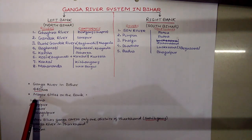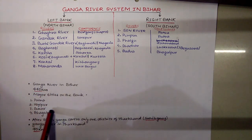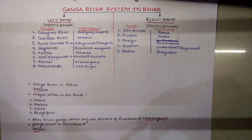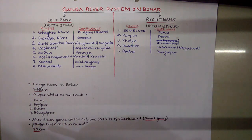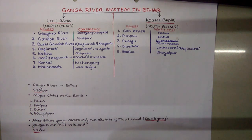Major cities on the bank of the Ganga in Bihar are: Patna, Hajipur, Buxar, and Bhagalpur. After Bihar, the Ganga covers only one district of Jharkhand — that is Sahibganj — and in Jharkhand it covers 40 kilometers.